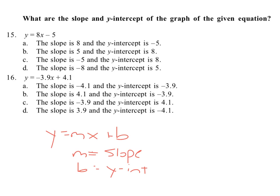So we can look at these equations and say, what's the coefficient of x? It's 8, so that must be the slope. What is the y-intercept? The y-intercept b is negative 5. So we have a slope of 8 and a y-intercept of negative 5. That is answer a.